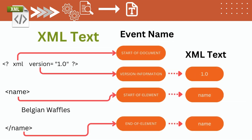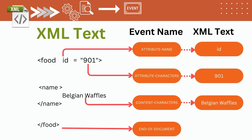XML text: for every event, XML-TEXT will contain the display value of the event. In simple words, if we have an element start tag, the XML event will be start-of-element and the XML-TEXT will be the name of the XML tag. We have listed a few examples for reference.